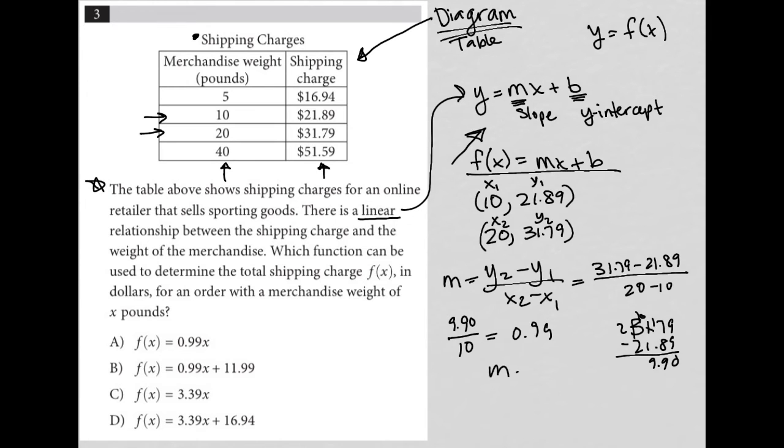So we know that our slope is equal to 0.99, which is helpful because that means choice D and C cannot be the answer because the slopes there are 3.39. And then the last thing to do is to find our Y intercept,